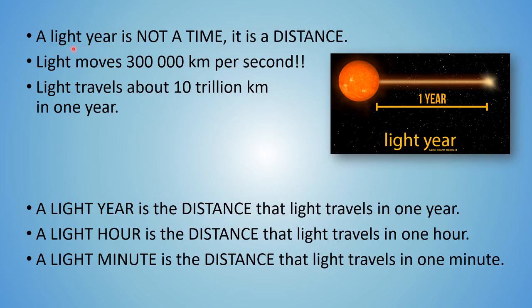It's very important to note: a light year sounds like a time, but it's not. It is a distance — specifically, it is the distance that light can move in a year. You already know that light moves really, really fast — it moves at 300,000 kilometers per second. That means light can travel about 10 trillion kilometers in a year, and that is a light year. A light year is the distance that light travels in one year.